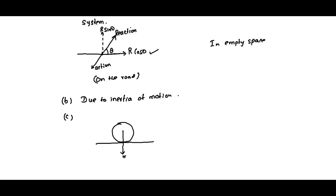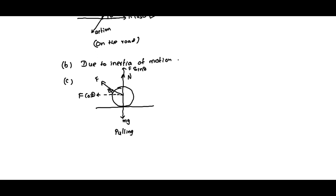Its weight acts vertically downwards, and normal reaction acts upwards. While pulling this one with a force F, if we resolve this force into two components — along horizontal: F cos θ, along vertical: F sin θ — then in the case of pulling, the normal reaction N equals mg minus F sin θ. Therefore, the frictional force in the case of pulling equals μ₀N = μ₀(mg − F sin θ).